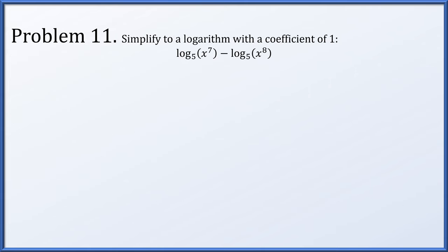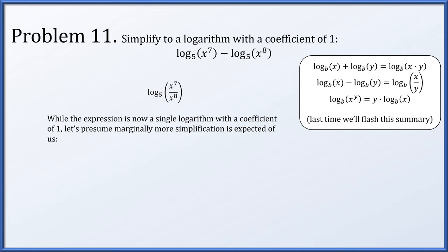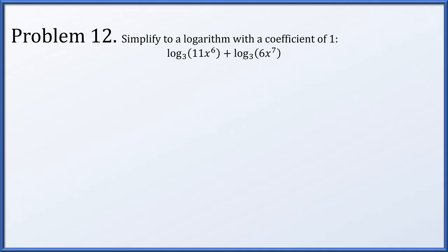Problem 11: simplify to a single logarithm with a coefficient of 1. We have log base 5 of x to the 7th minus log base 5 of x to the 8th. As a difference of logarithms, this becomes the log base 5 of x to the 7th over x to the 8th, which simplifies to log base 5 of 1 over x. Problem 12: the sum of log base 3 of 11x to the 6th plus log base 3 of 6x to the 7th equals the log base 3 of their product: 66x to the 13th.